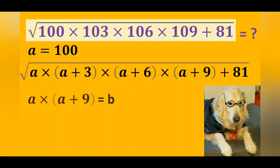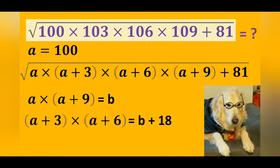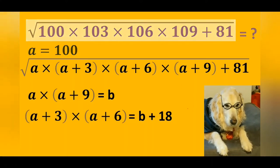Let's equate the product of the variable a with the variable a plus 9 to the variable b. In this case, the product of a plus 3 and a plus 6 will equal b plus 18.